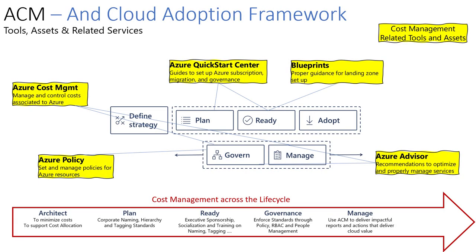From the very beginning of the lifecycle, solutions should be architected to minimize costs and to facilitate easier cost management. For example, maybe your business would benefit from selecting more platform as a service or PaaS services rather than infrastructure as a service or IaaS services such as VMs, as this may reduce costs because you only pay for what you use when you are using it and there is less need to shut down services when not in use. Architecting solutions in a modular manner that aligns with organization and cost center boundaries can also help in cost management and justifying and securing funding.